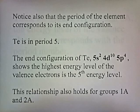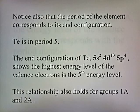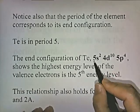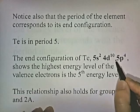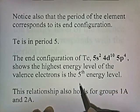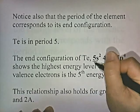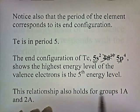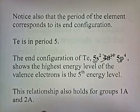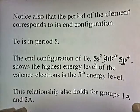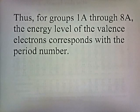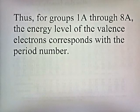Notice also that the period of the element corresponds to its end configuration. Tellurium is in period 5, and the end configuration — 5s2, 4d10, 5p4 — shows that the highest energy level of the valence electrons is the fifth energy level. This relationship also holds for groups 1A and 2A. So for groups 1A through 8A, the energy level of the valence electrons corresponds with the period number.